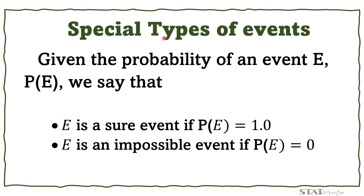Now let's consider special types of events. Given the probability of event E: we say E is a sure event if P(E) = 1, and it is an impossible event if P(E) = 0. Take note that a null event and an impossible event have different meanings — study that in your probability subject.